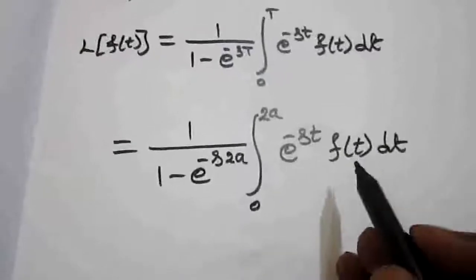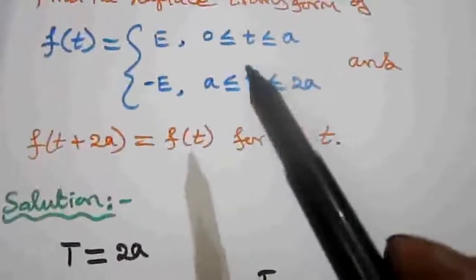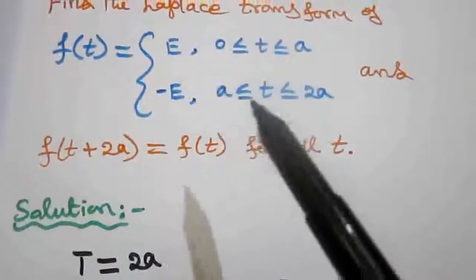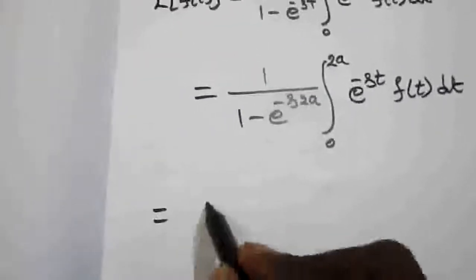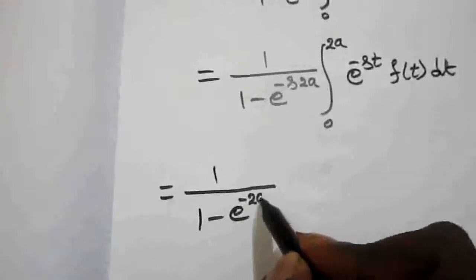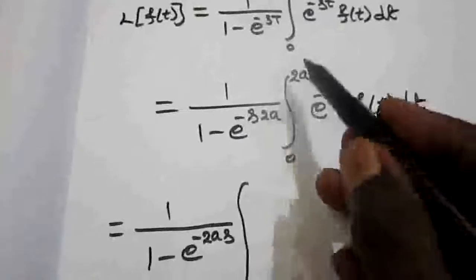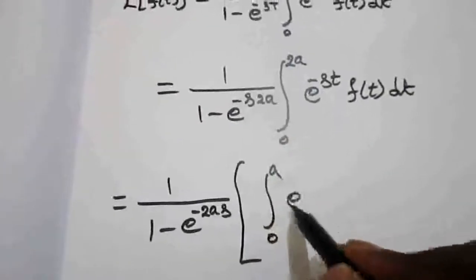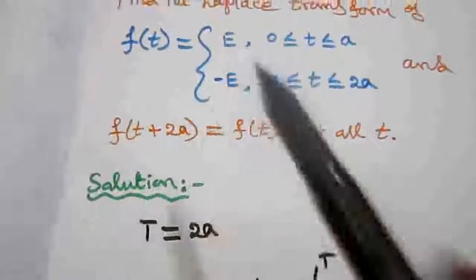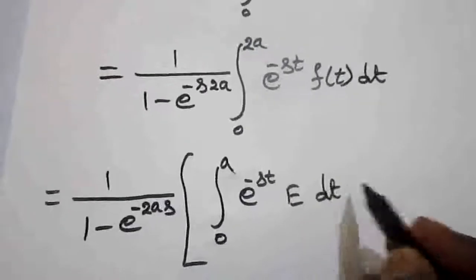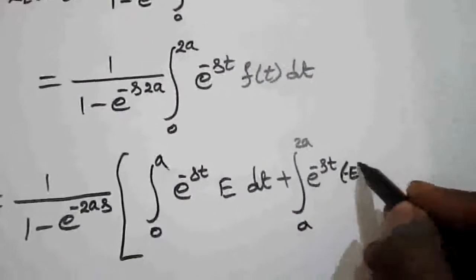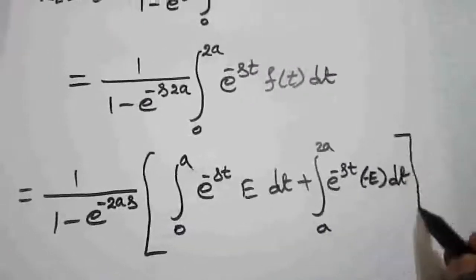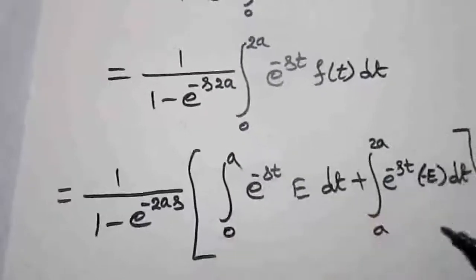Now substituting f of t: in the interval 0 to a it is capital E, and in the interval a to 2a it is minus E. We divide the integral 0 to 2a into two parts: 1 by 1 minus e power minus 2as, times the bracket integral 0 to a of e power minus st times E dt, plus integral a to 2a of e power minus st times minus E dt.